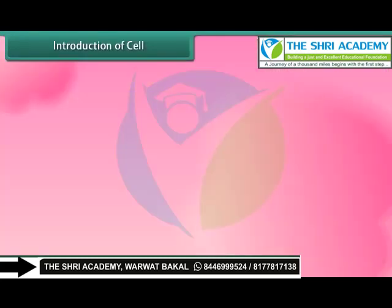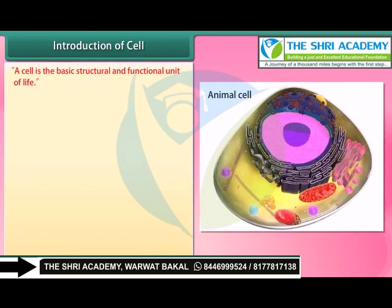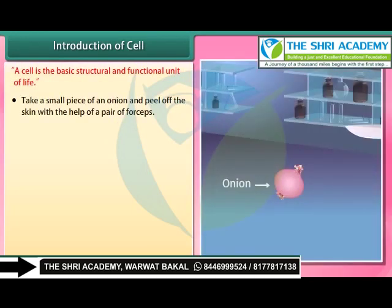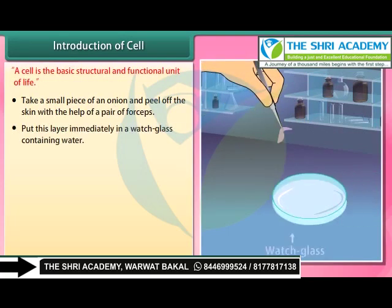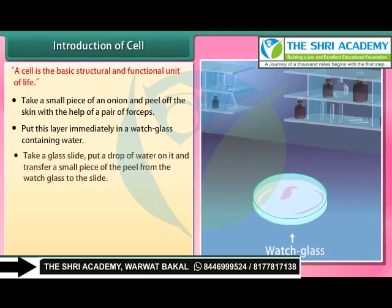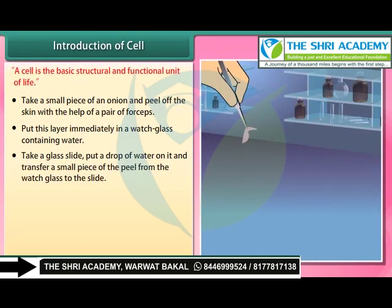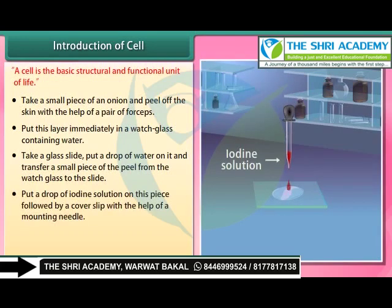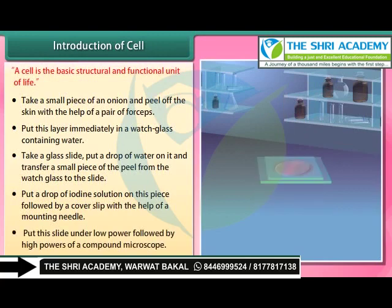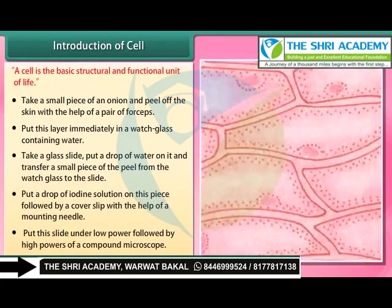A cell is the basic structural and functional unit of life. In an experiment, take a small piece of an onion and peel off the skin with the help of forceps. Put this layer in a watch glass containing water. Place a drop of water on a glass slide, transfer a small piece of peel onto it, add a drop of iodine solution, place a cover slip, and observe under low and then high power of a compound microscope. All these structures are similar to each other.